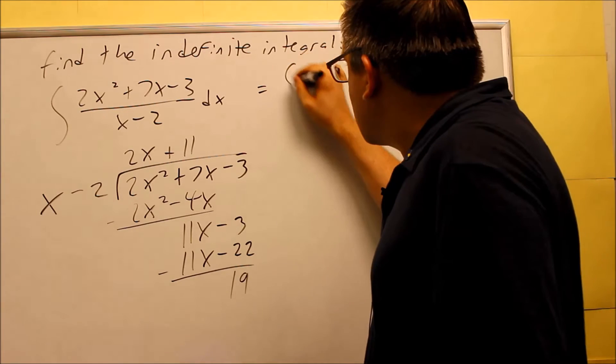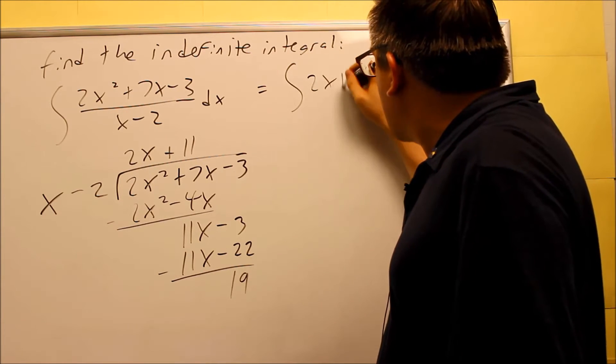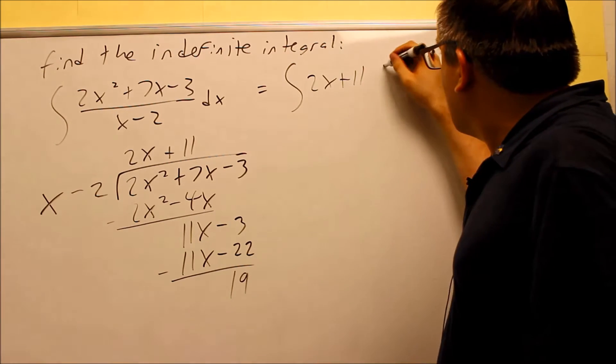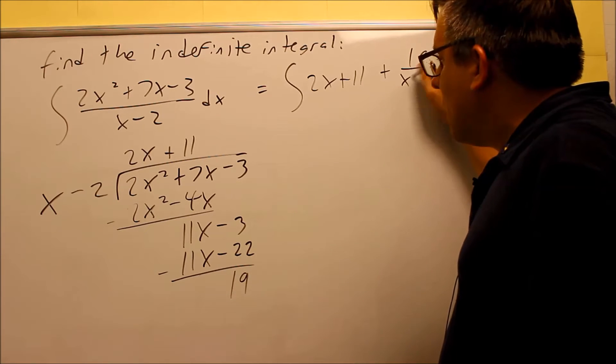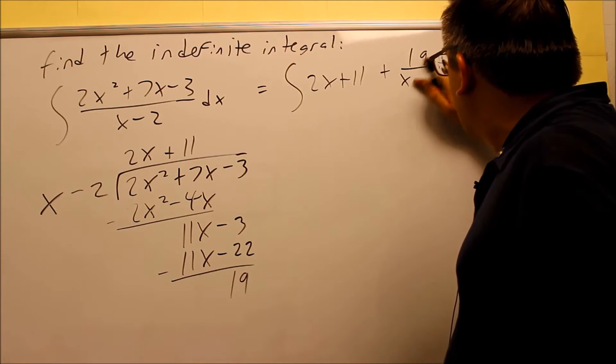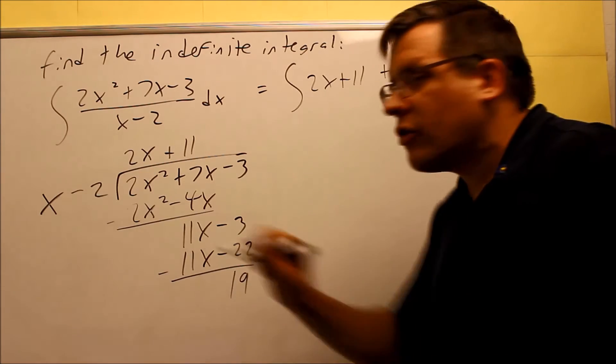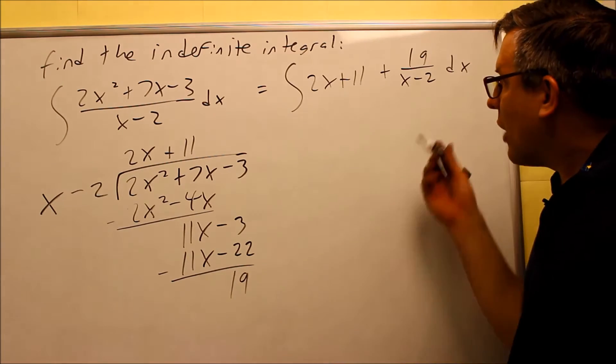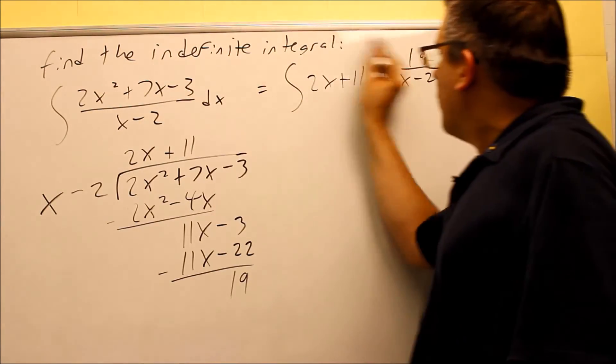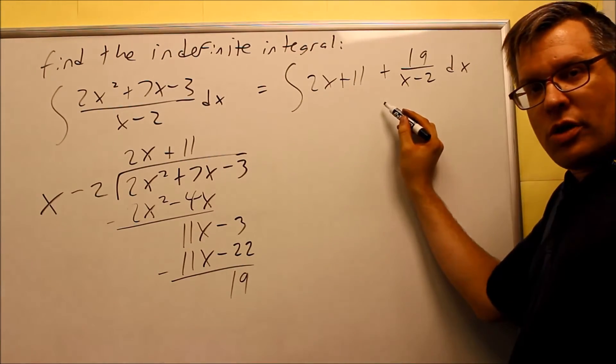So that tells us that we can rewrite this now as 2x plus 11. And then you're going to do plus 19 over x minus 2. This is how you write this all out. You put your remainder over whatever it is that you're dividing by.